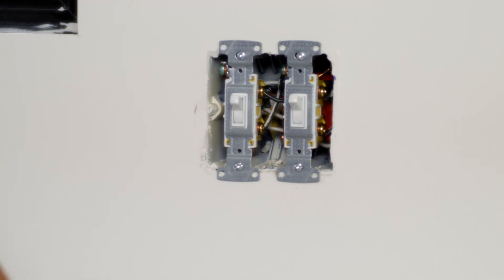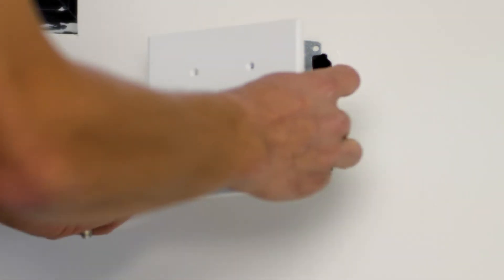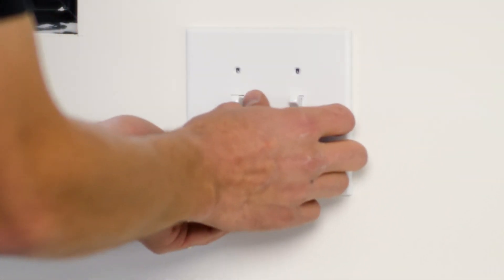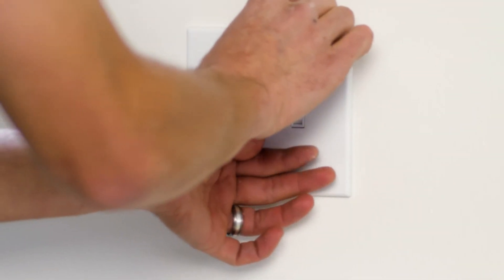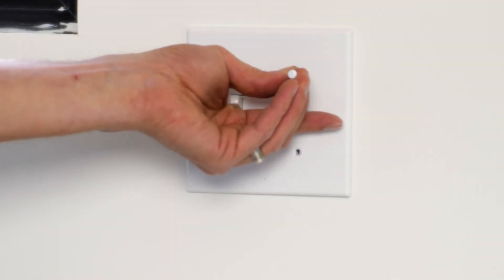All right, now in this multi-switch installation, I want to have the switches aligned such that the plate fits comfortably over both switches, and nothing looks cocked left or right.